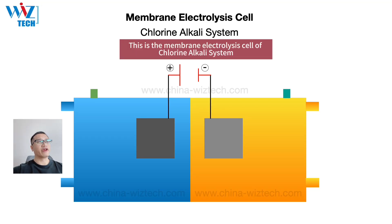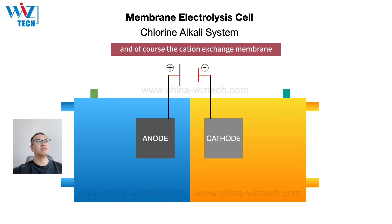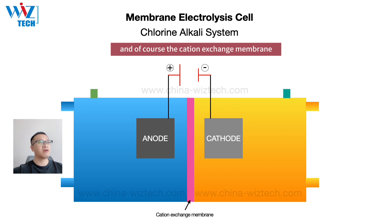This is the membrane electrolysis of the chlorine-alkali system. We have an anode and cathode for electrolysis, and of course, the cation exchange membrane.